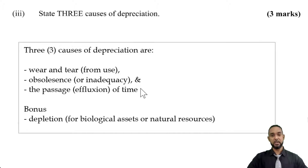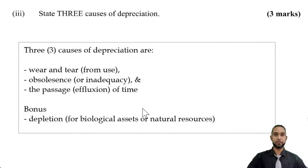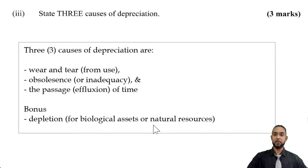As a bonus cause, I have depletion. This applies to biological assets — for example, if you have crops like orange trees, when you pick your crops you have less of those crops left. Or natural resources like an oil field, natural gas field, or quarry — the more you extract from the earth, the less there is left, as it's not usually self-replenishing.